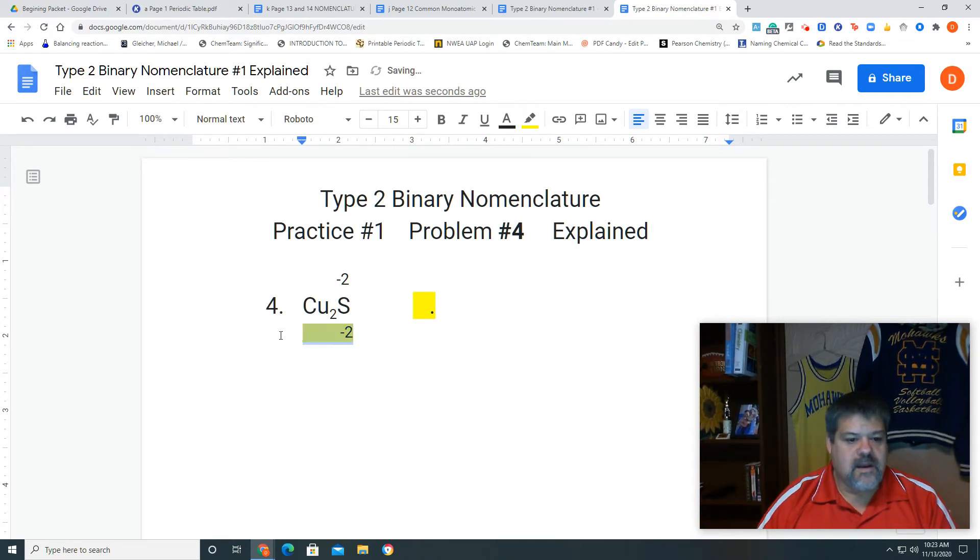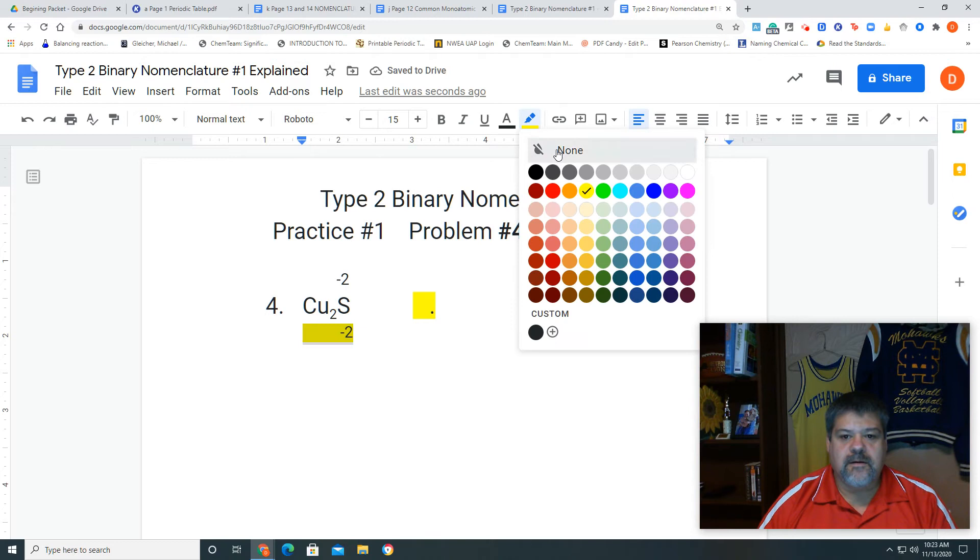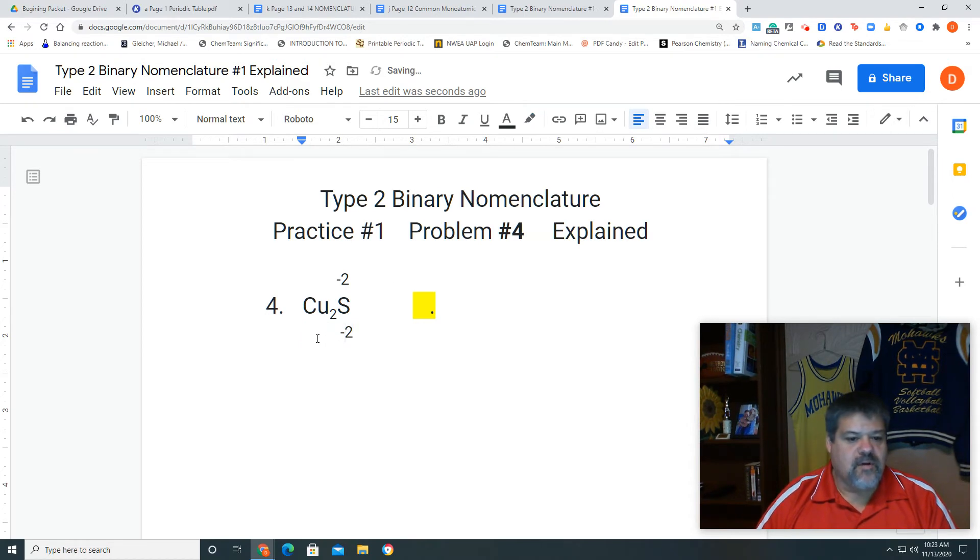Okay, and I'm just going to get rid of that highlight there. And so our total positive charge for our copper has to be a plus 2.